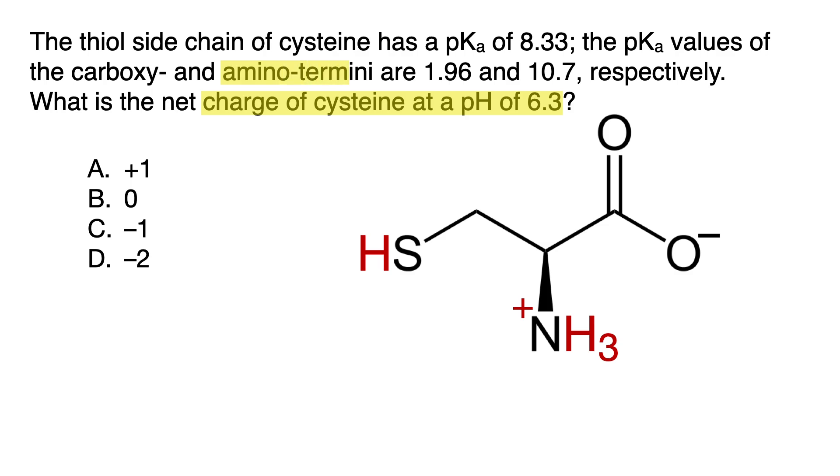because the pH that the question is asking about has not yet reached the pKa of 10.7. So the amino acid stands at having one negative charge and one positive charge, making the answer zero.